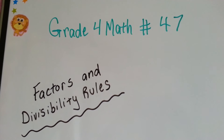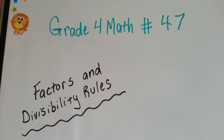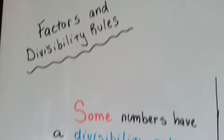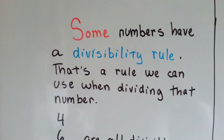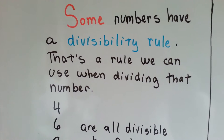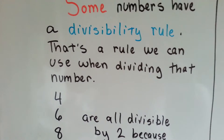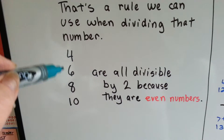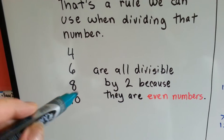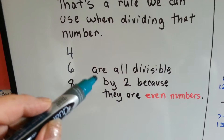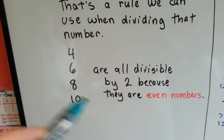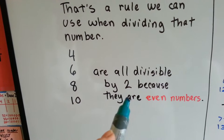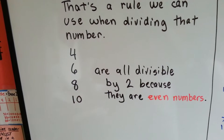Grade 4 math, number 47: Factors and Divisibility Rules. Some numbers have a divisibility rule — that's a rule we can use when dividing that number. 4, 6, 8, and 10 are all divisible by 2 because they're even numbers. Being even numbers is the divisibility rule for 2.